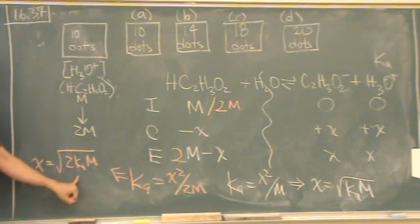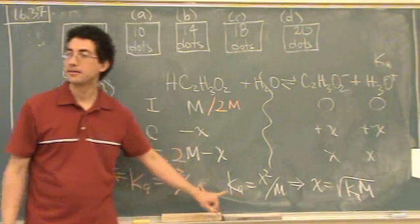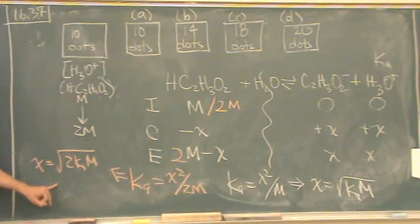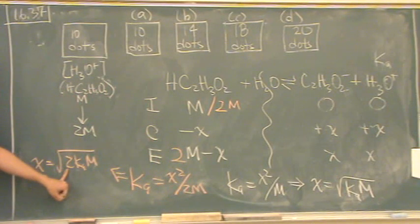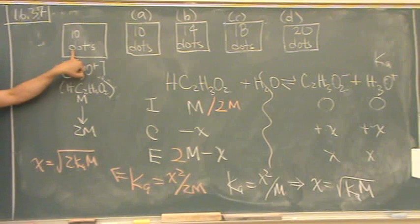So do you see how this one is 1.4 times bigger than this one? The square root of 2 times bigger. So 1.4 times bigger. That's the key part. Are you okay with that? So what's 1.4 times bigger than 10? Well, 10 times 1.4 is 14.